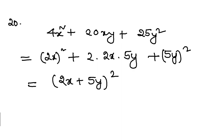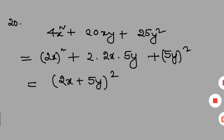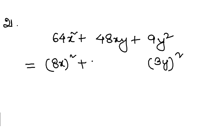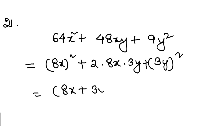Let's go to the next question, that is 21. 64x square is 8x whole square and 9y square is 3y whole square, plus 2 into 8x into 3y. So this will again be 8x plus 3y whole square. All are similar questions.